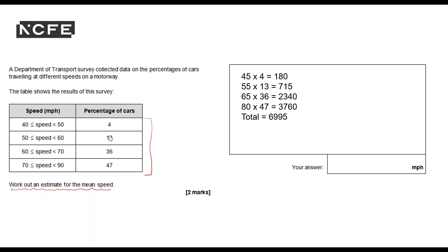I thought so. So 6,995 divided by 100 equals an average speed of 69.95 miles per hour.